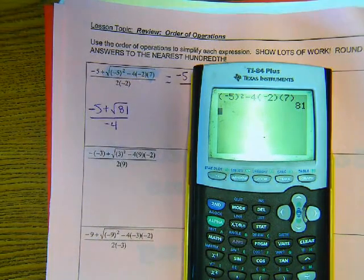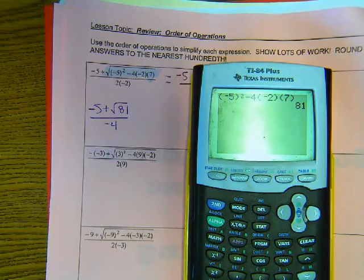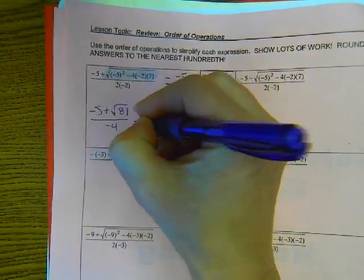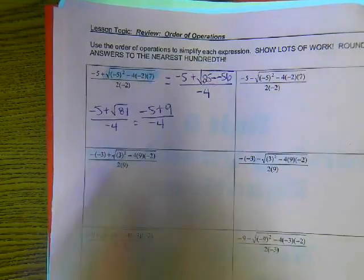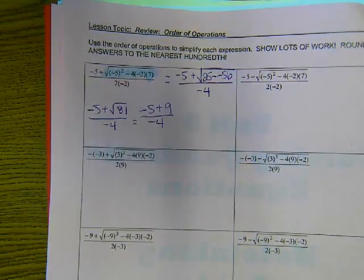We know the square root of 81, don't we? What is it? 9. So, now I do negative 5 plus 9 divided by negative 4. What am I going to do? Don't type this all in.